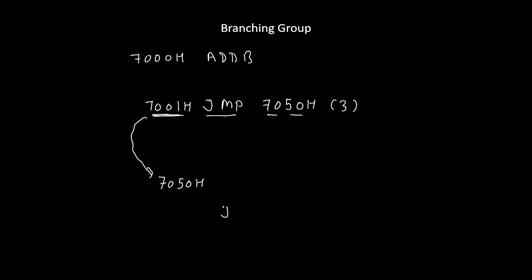One more example is JZ 3090H — JZ stands for jump if zero. If the zero flag is set, then only this jump will be executed. JZ 3090H is also a three-byte instruction: JZ is the first byte, 30 is the second byte, and 90 is the third byte. Our observation is that all branching group instructions are generally three-byte instructions.